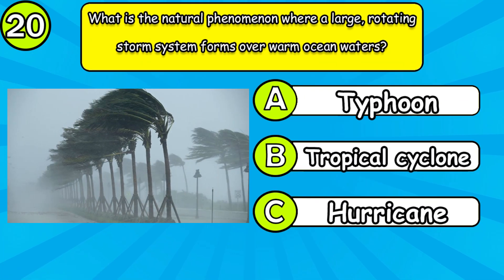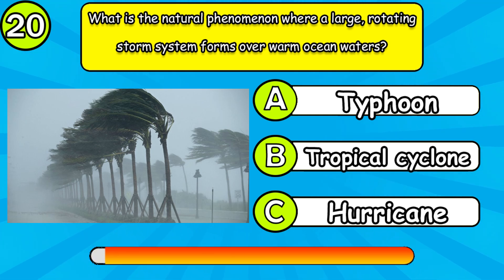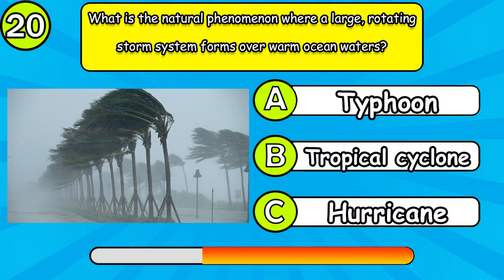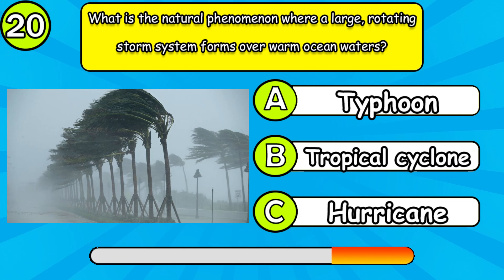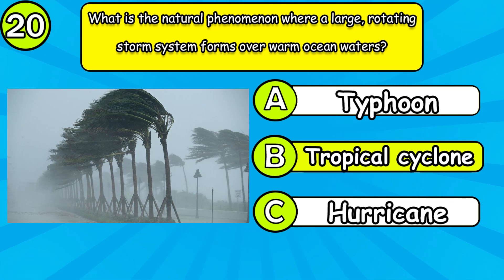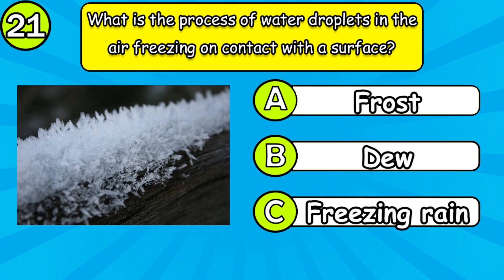What is the natural phenomenon where a large rotating storm system forms over warm ocean waters? What is the process of water droplets in the air freezing on contact with the surface?